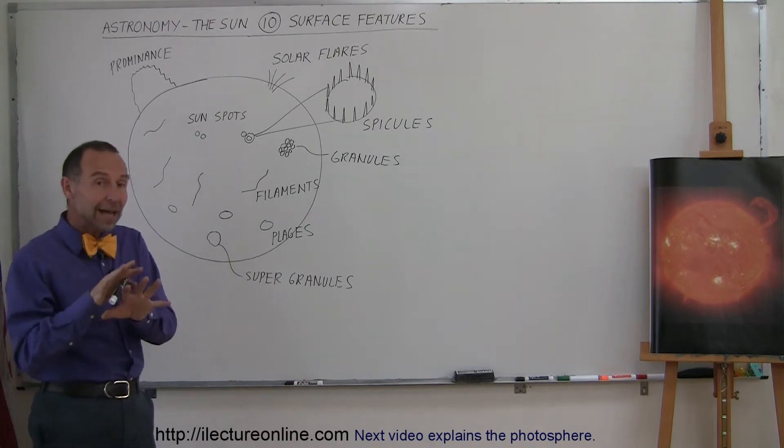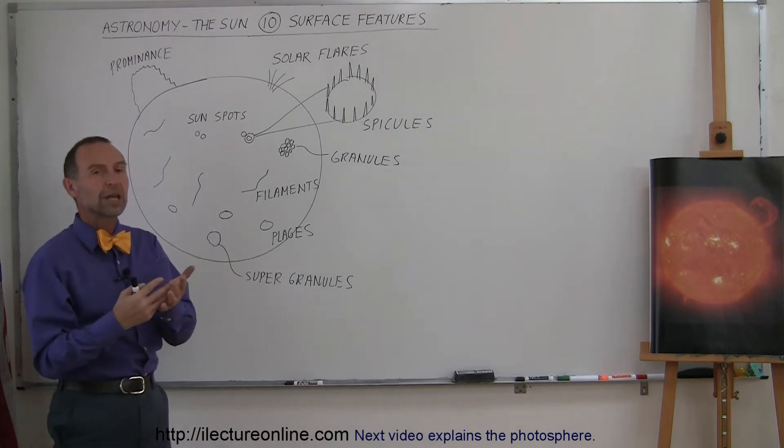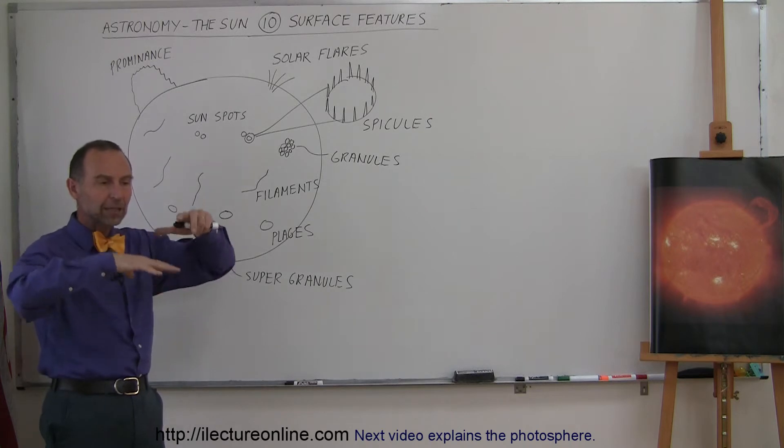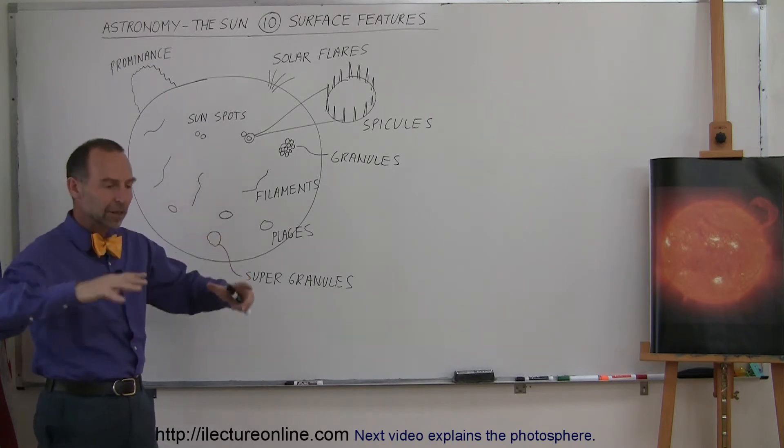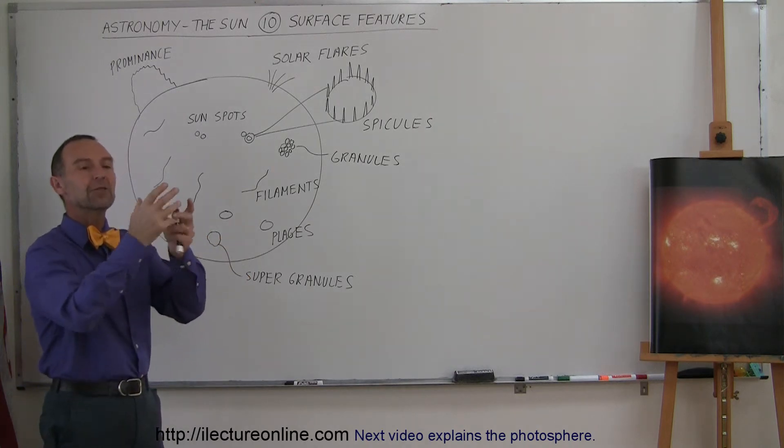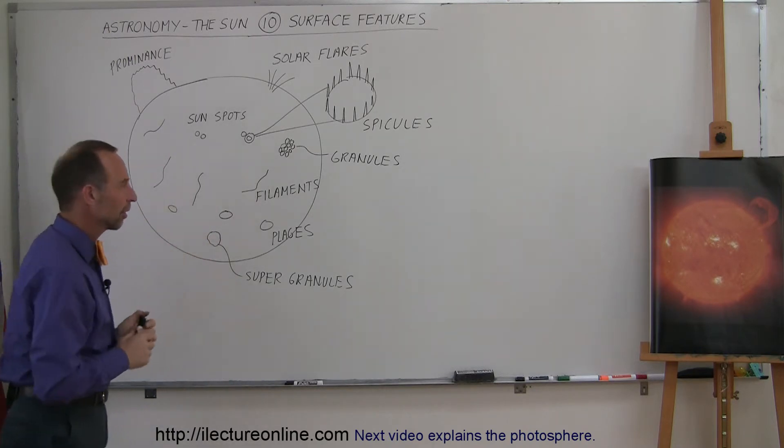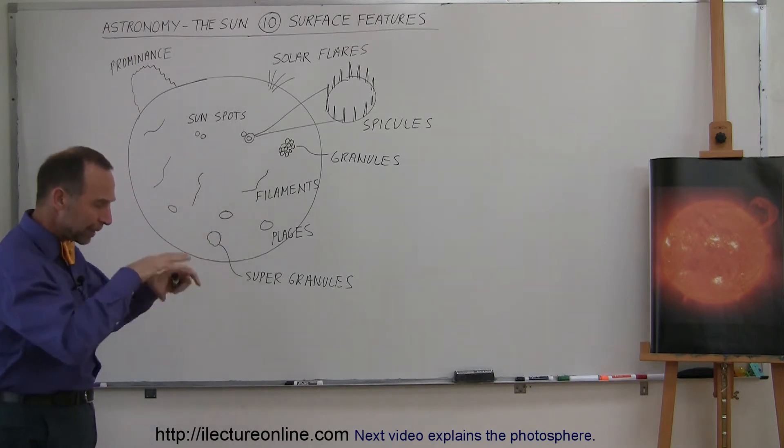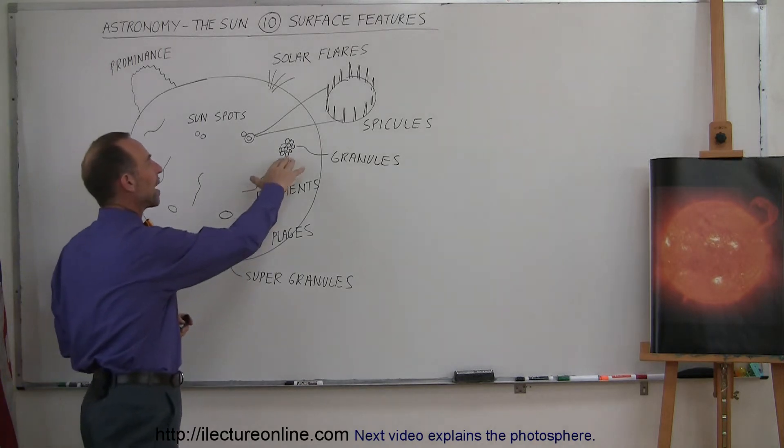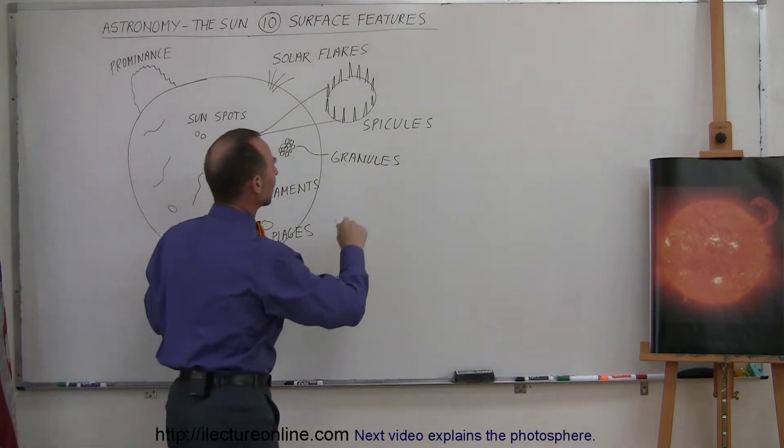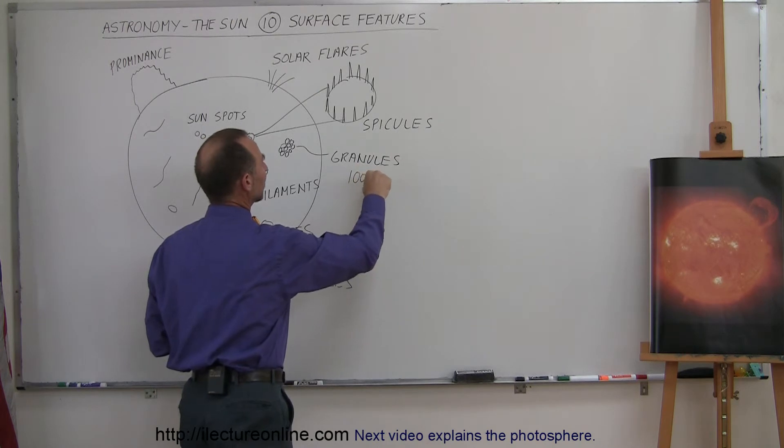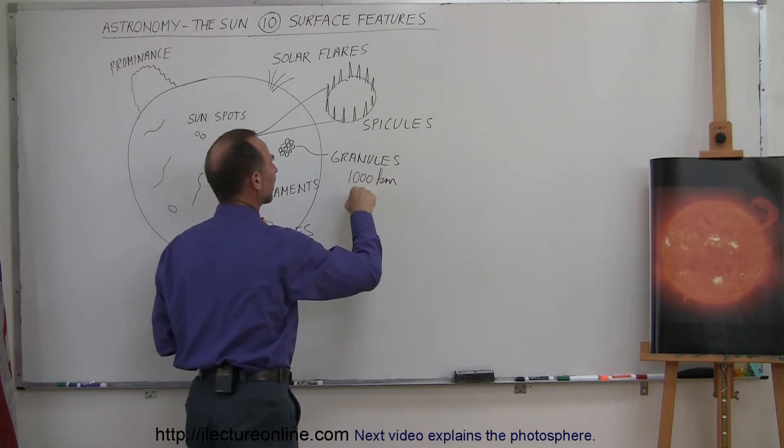Now the one thing that is not a function of the differential rotation is the bubbling up of the surface of the Sun because of the convection currents bubbling the heat from the radiation zone up towards the surface, the photosphere of the Sun. And so those bubbling features, they're called granules. They're about a thousand kilometers across, about 600 miles across, kind of about the size of the state of Texas.